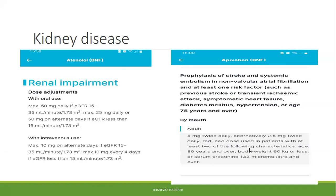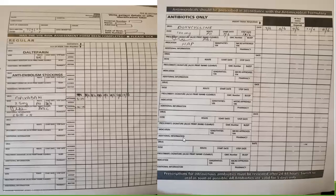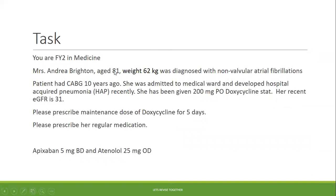The BNF states Apixaban 5 mg BD, but alternatively 2.5 mg twice daily as a reduced dose, used in patients with at least two of the following criteria: age 80 years and over, body weight 60 kg or less, or serum creatinine 133 micromol per litre and over. Going back to the patient — age is over 80, so that is one criterion. Weight is over 60 kg, so that criterion is not met. However, eGFR is low, and although creatinine is not directly stated, with an eGFR this low the serum creatinine is likely elevated. So we will change this Apixaban.